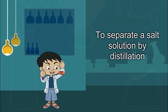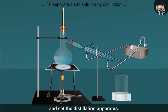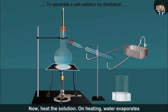To separate a salt solution by distillation. Take some salt water in a round bottom flask and set the distillation apparatus. Heat the solution. On heating, water evaporates and rises up in the form of vapour.